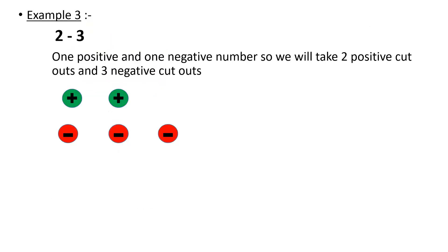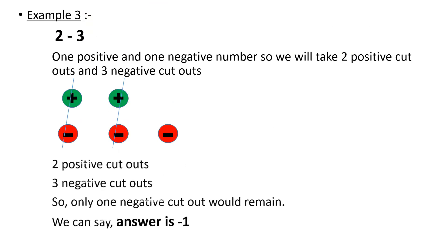Now the example two minus three. Here two is a positive number and three is a negative number. So we take two positive cutouts and three negative cutouts. Positive and negative cancel out, positive and negative cancel out again, and we are left with one negative cutout. That means minus one is the answer. If we were left with two negative cutouts it would be minus two.